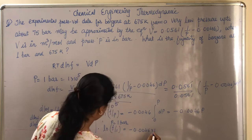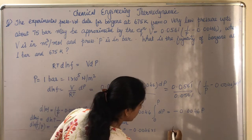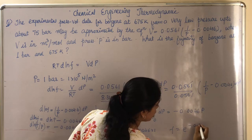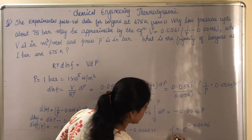Calculate this, so you will get f. The value of this is e^(-0.0046), which equals 0.9954 bar. So hope you understand this.